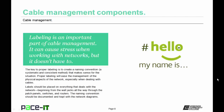Labels should be placed on everything that deals with the network, beginning from the wall jacks all the way through to the patch panel, switches, and routers. The naming convention should be documented and kept with the network diagrams.